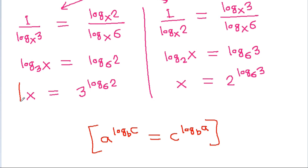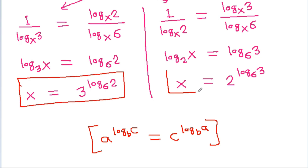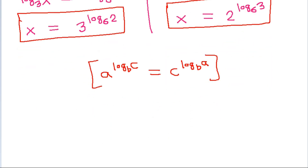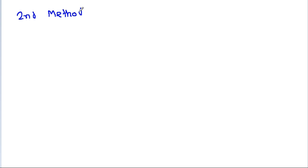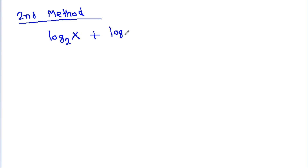Both the values of x are exactly the same. Now for the second method, we have log base 2 of x plus log base 3 of x is equal to 1.